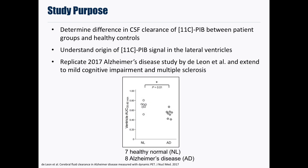In this study, we aim to determine whether there are differences in ventricular CSF clearance between patient groups and healthy controls, while also gaining a better understanding of where the PET tracer in the CSF of the lateral ventricles is coming from. Ultimately, we wanted to replicate a 2017 study in Alzheimer's disease by DeLeon and colleagues that showed decreased ventricular PiB measures in Alzheimer's disease compared to controls, and extend our study to include mild cognitive impairment and multiple sclerosis patients.